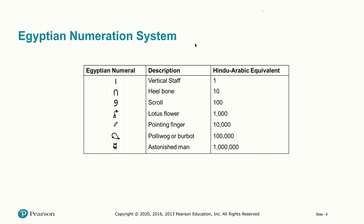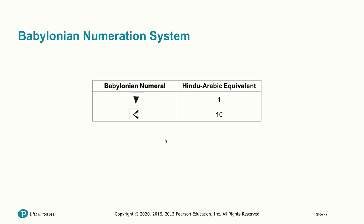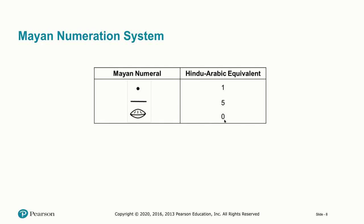When you see some of the older systems, you really start to gain an appreciation for the Indo-Arabic system we use in the modern world and how much simpler it is. In the Babylonian system, an upside-down filled triangle represented 1, and a sideways V represented 10. For Mayans, zero was represented by a space-shuttle-type object, a bar represented 5, and a dot represented 1.